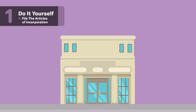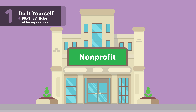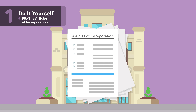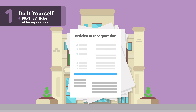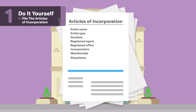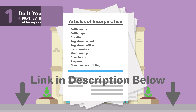Step four: to form a nonprofit corporation, you will need to file official papers with Missouri. In Missouri, this is called the Articles of Incorporation. Some information you may need to include in the Articles of Incorporation: Entity Name, Entity Type, Duration, Registered Agent and Registered Office, Incorporators, Membership, Dissolution, Purpose, and Effectiveness of Filing. For more information on the sections of Missouri's Articles of Incorporation, check out our page linked below.